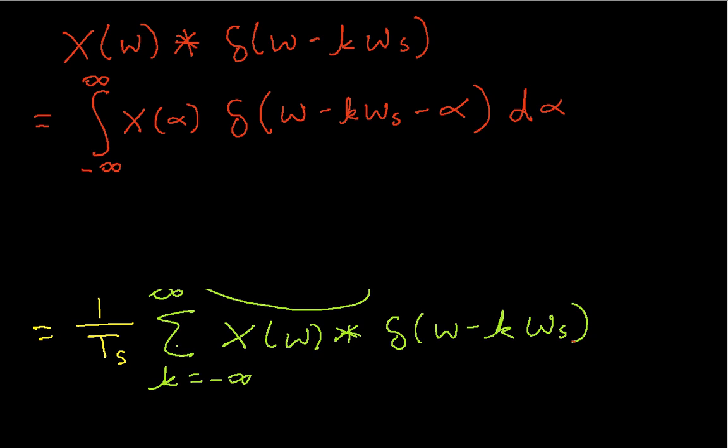This is exactly like a convolution integral that's in the time domain, except now we're integrating over a frequency variable. This delta function is zero except when alpha is equal to omega minus k omega s. And when alpha is equal to omega minus k omega s, then I have this whole thing being equal to x of omega minus k omega s.